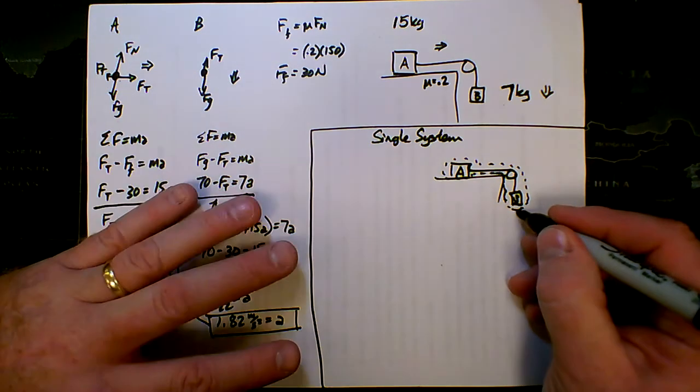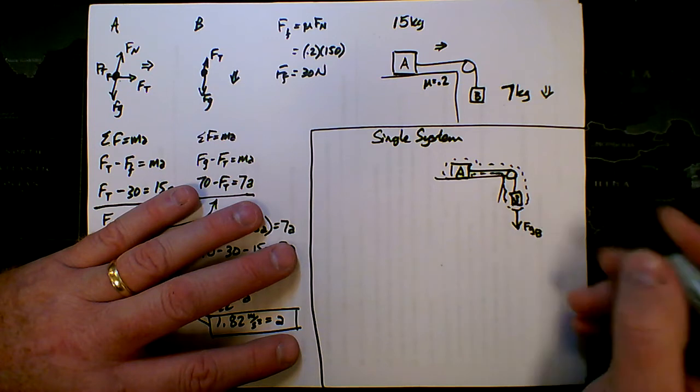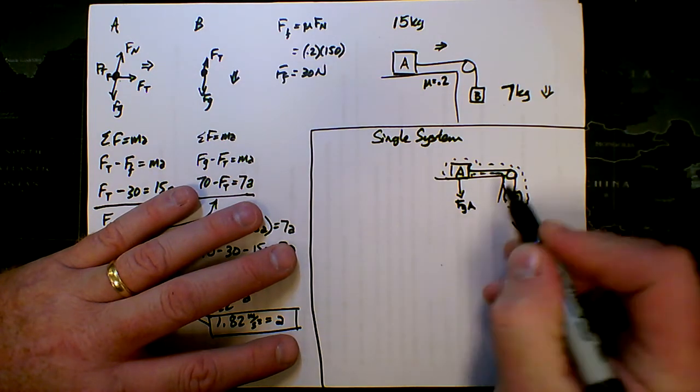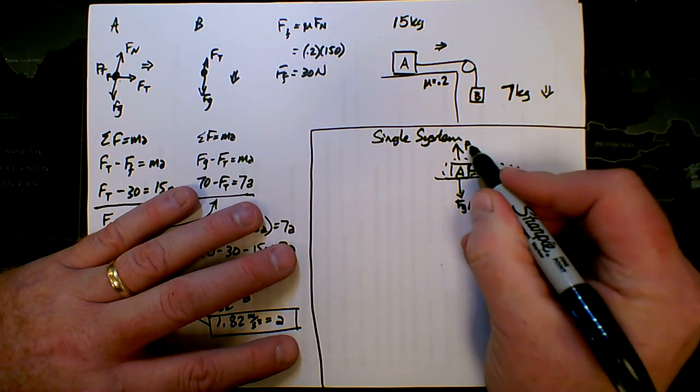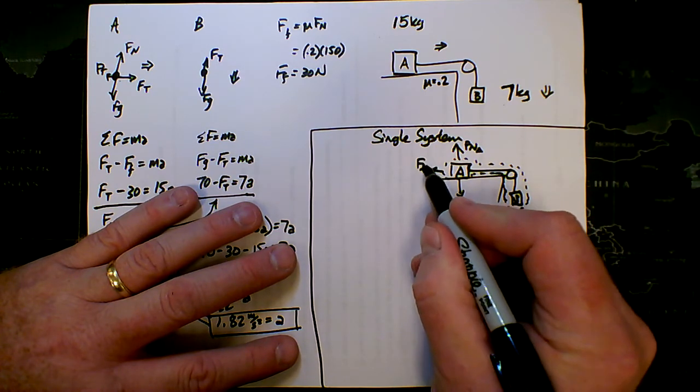So I'll do my little dotted line around my system. Then I draw outside forces acting on my system. So I've got here the force of gravity of B, force of gravity of A, normal force on A, and there's a friction force on A as well.